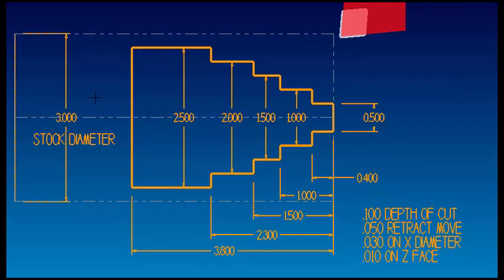Alright, for this example we're going to be using a 3 inch piece of bar stock and you can see I've dimensioned this shape that we're going to be rough turning using the G71 canned cycle. You can see all the diameters starting with 1.5 inch all the way up to 2.5